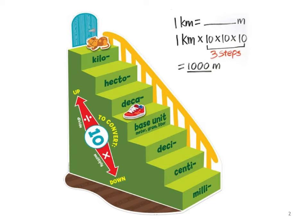The same happens as we go up — we divide by 10 as we go up. So if we go from 1 millimeter up to deca, it would be 0.1. Divide by 10 again and it's 0.01 for hecto. Going up again gives 0.001. That's basic conversion — like going up and down steps.